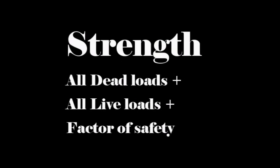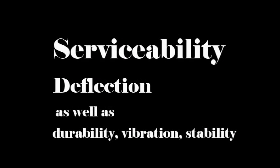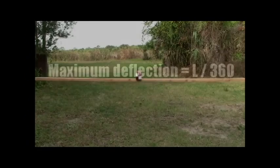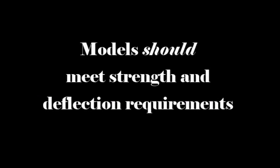There are two fundamental parameters of structural design. The first is strength — each component must be able to hold the dead load plus the live load plus a significant factor of safety. The second is serviceability: the structure must support all loads without excessive deflection. For example, a building can't sway in the wind or have bouncy floors, even if it's perfectly strong. Building codes have an allowable deflection; for the towers, it's the beam length divided by 360, or L/360. Any experimental model should meet these two basic requirements.